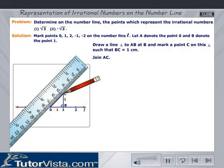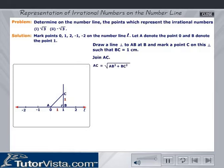Join AC. Let us calculate the value of AC. Applying the Pythagoras theorem to triangle ACB, we have AC equals root of AB square plus BC square. That is equal to root of 1 square plus 1 square, which equals root 2.